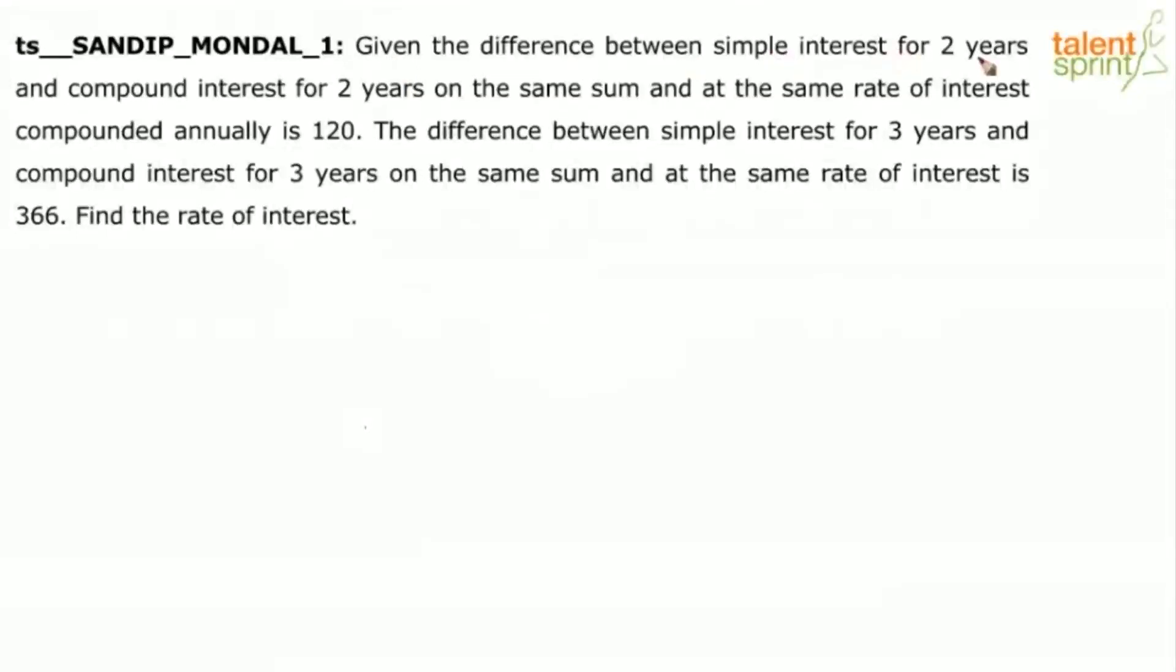Given the difference between simple interest for 2 years and compound interest for 2 years on the same sum at the same rate of interest, compounded annually, is 120.